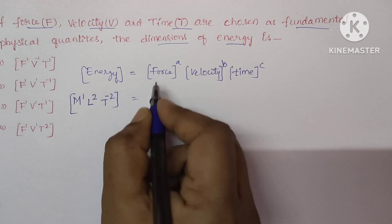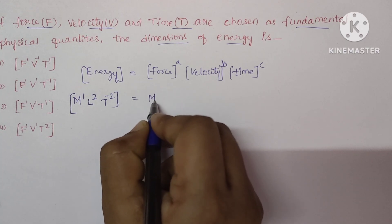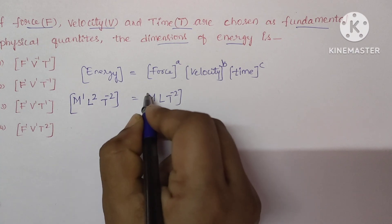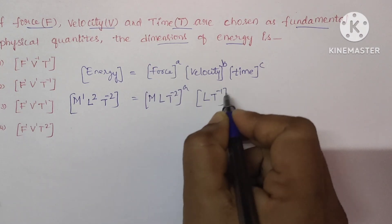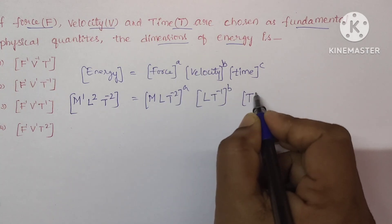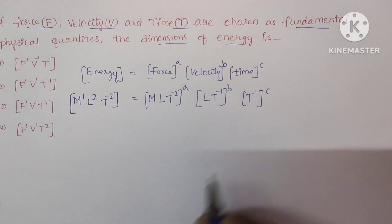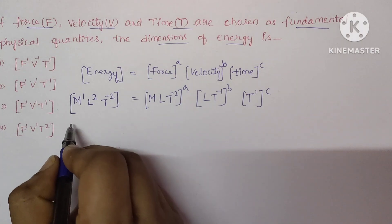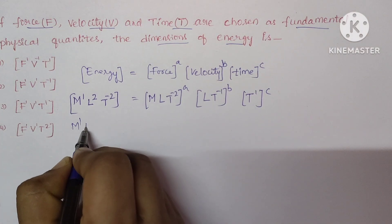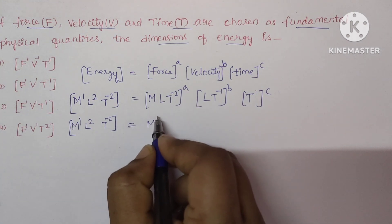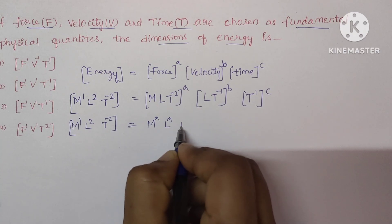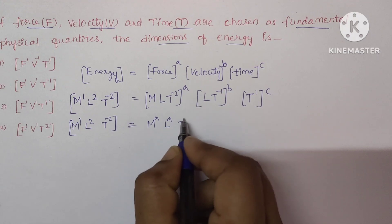So which is equal to force. So the dimensions of force is M L T power minus 2 whole power A and for velocity L T power minus 1 whole power B and time is simply T power C. Now multiply this A inside of this brackets. So you will get here M L power 2 T power minus 2 and which is equal to here it is M power A L power A and T power here minus 2 into A minus 2A.